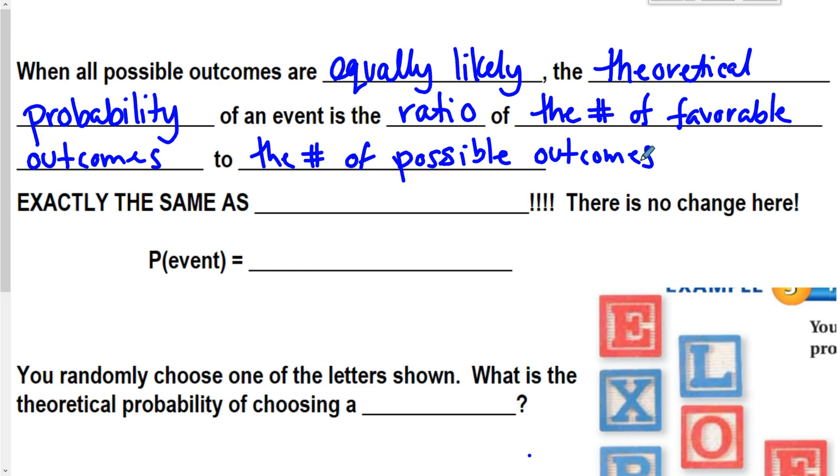Okay. Main thing here, this is the exact same as probability. So every time you guys have been finding probability so far, you've been finding the theoretical probability. So theoretical probability is the exact same that you took notes on yesterday. So, again, number of favorable outcomes. So how many do you have that you actually want to occur?